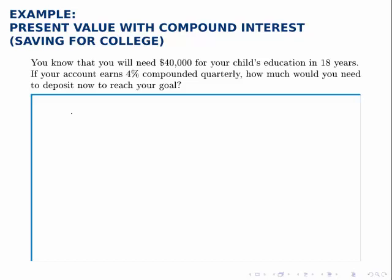Suppose that you know you'll need $40,000 for your child's education in 18 years. You have an account that earns 4% compounded quarterly, so that tells us that this is compound interest.